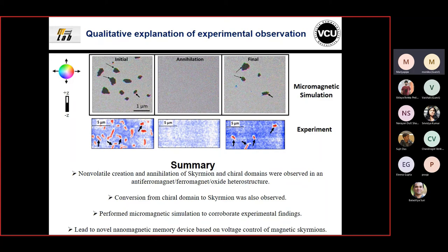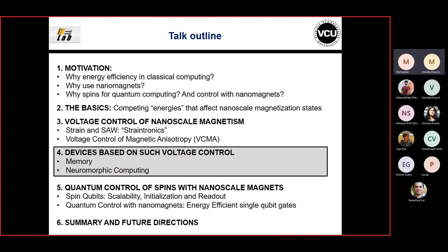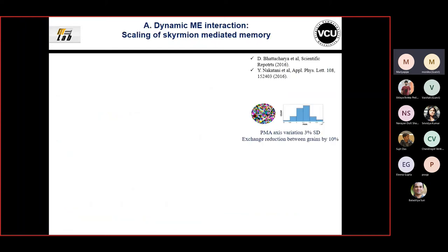In summary, we can in a non-volatile fashion create and annihilate skyrmions and other chiral domains in this heterostructure. Micromagnetic simulations corroborate what we find experimentally. This could lead to novel magnetic computing devices.